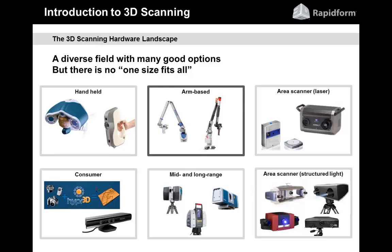There are also arm-based scanners, which are very popular because a lot of portable arms are already out in the marketplace. Those arms can be used for contact-based measurement — in other words, with a probe. So you can use both non-contact scanning measurement as well as contact measurement. By using those two technologies together, that opens up a lot of opportunities, and RapidForm can support both types of measurement, from the scanner or from the probe.